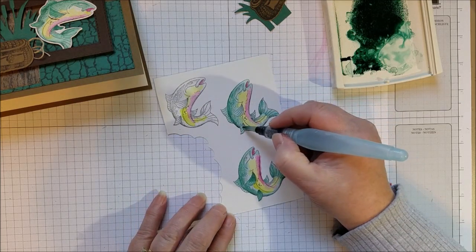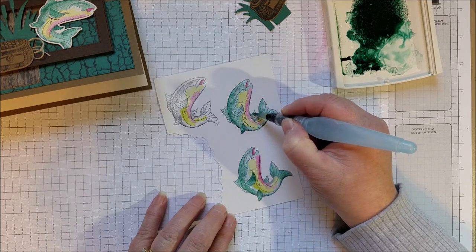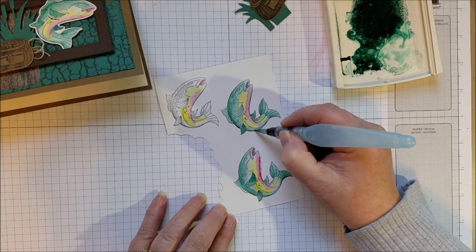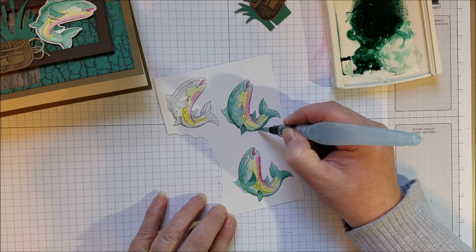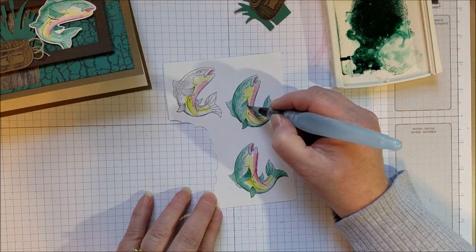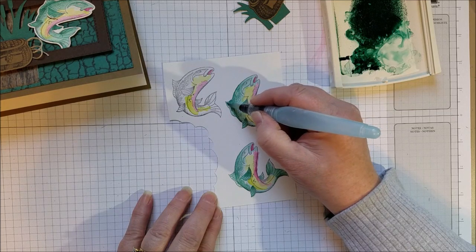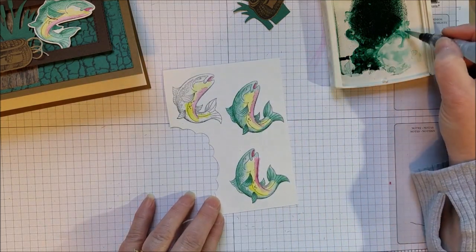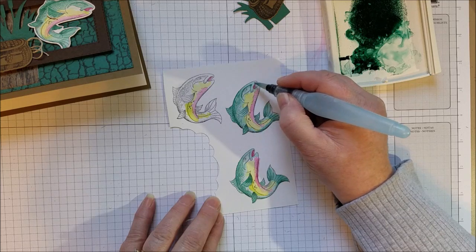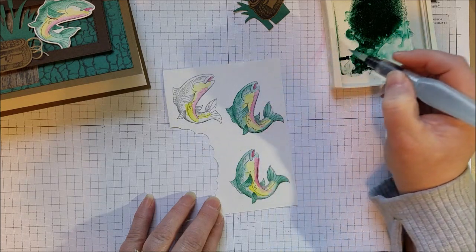And now I'm going to go add some darker details to the fin here. Now I want to show you the die that cuts out this fish. It's really fun. When you buy the stamp set and the die together, you're going to get a 10% discount on the bundle, which is nice. And the dies for this are really fun.